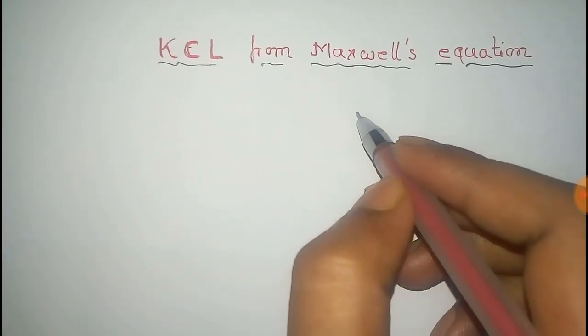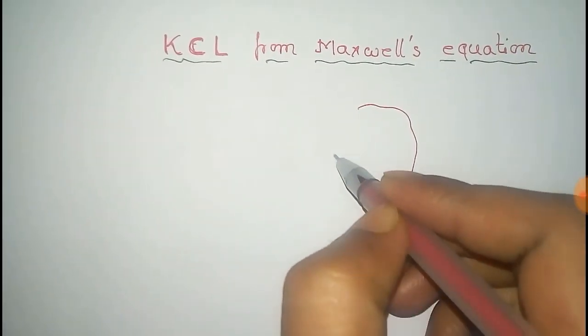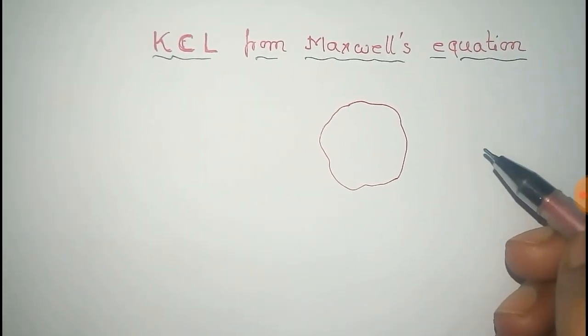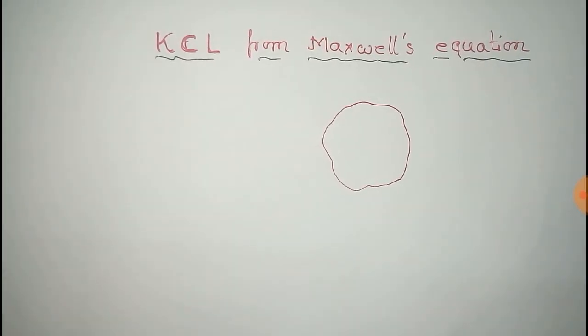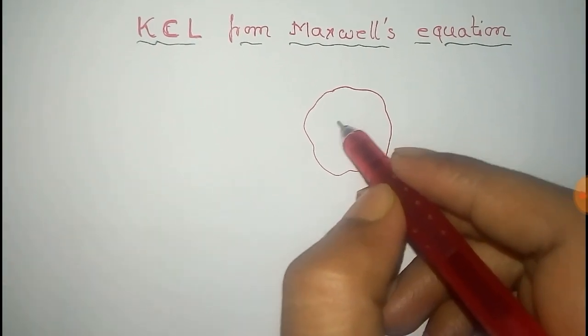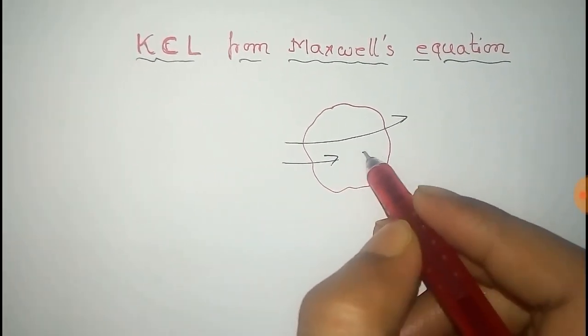First of all, consider a volume bounded by a closed surface. The magnetic flux will be directed in this way.